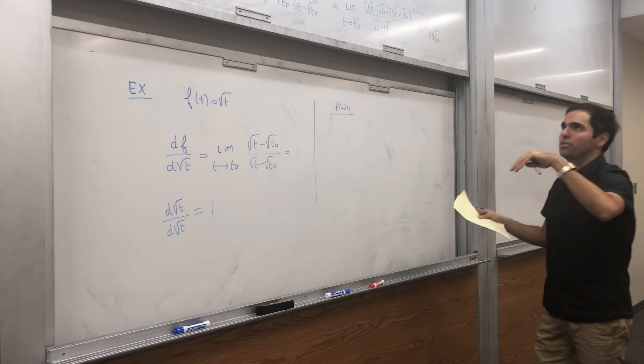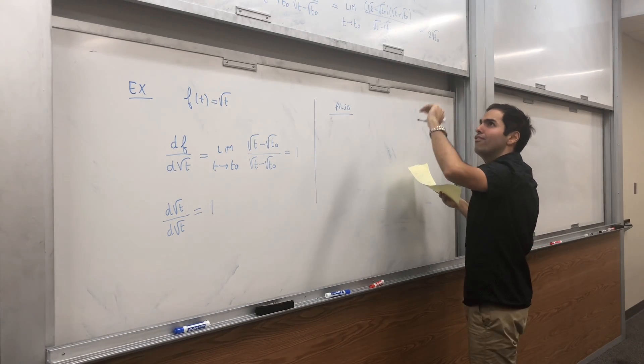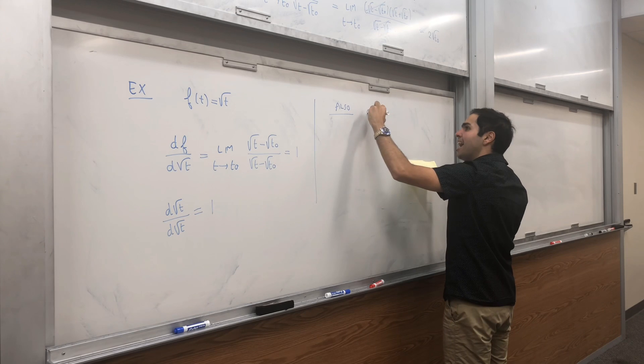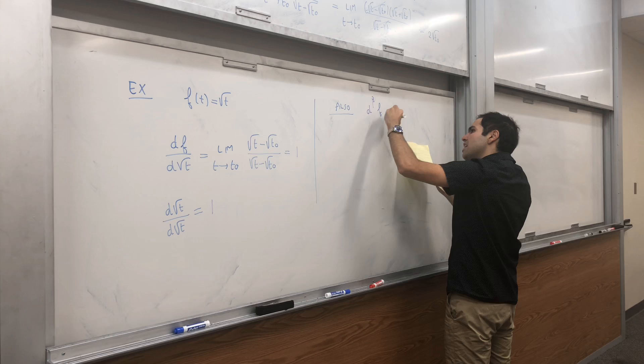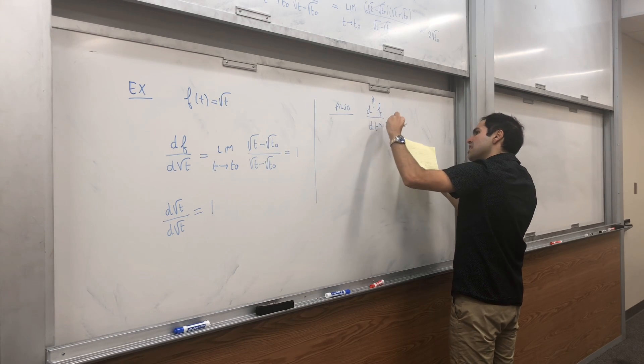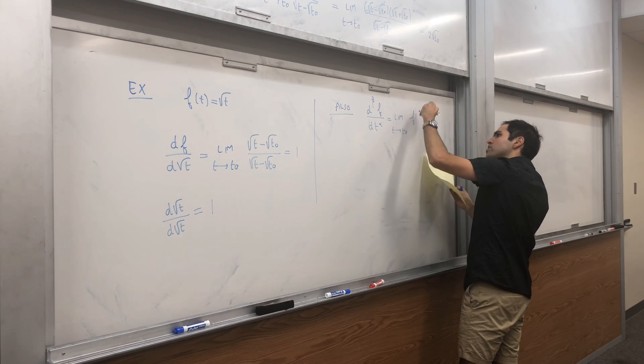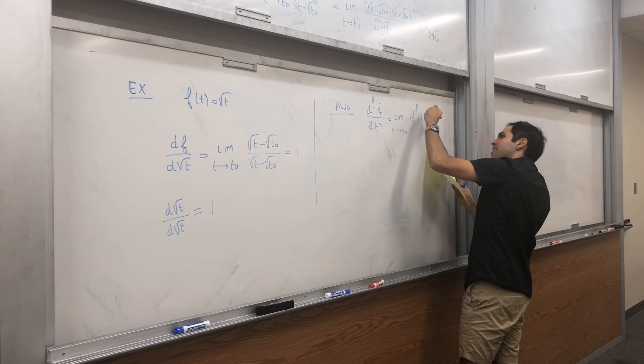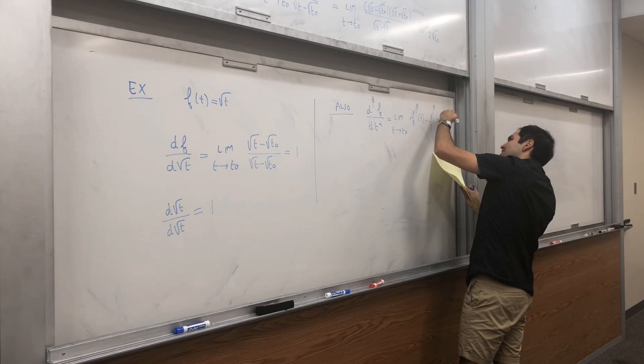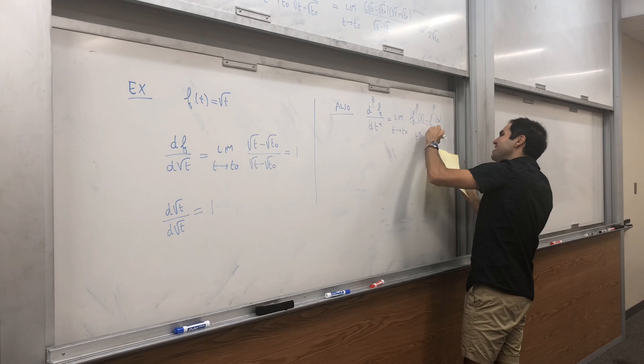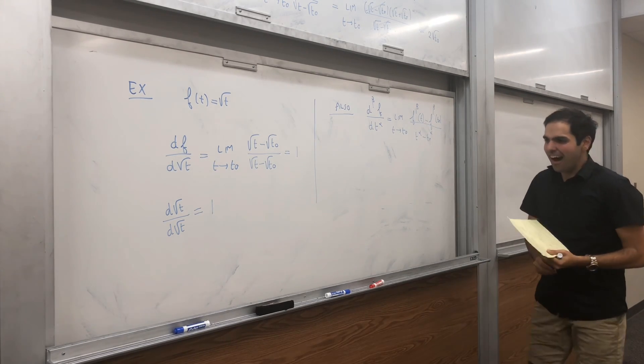turns out you can also do sort of alpha derivative of f at t, and now we can also do beta derivative at t alpha. And that just becomes the same thing. Limit t goes to t naught. I think you just raise f to the beta power. I think that's what this notation means. Again, I didn't come up with this. It's just a Wikipedia thing. And I want you to be aware of. Okay, now.